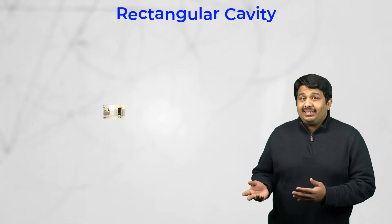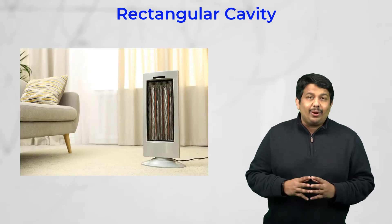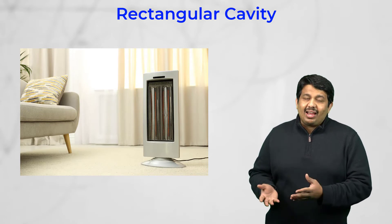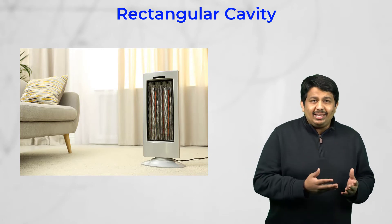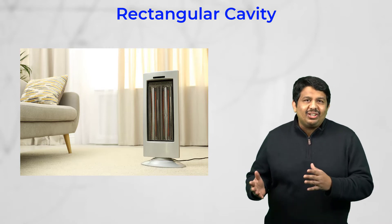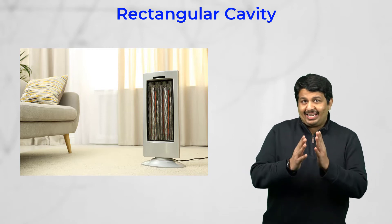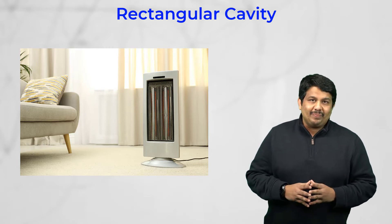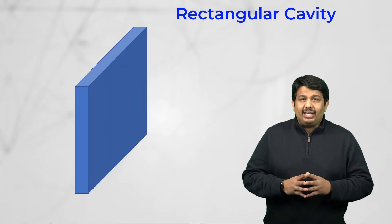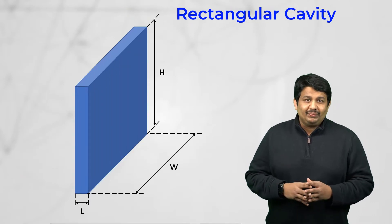A space heater inside a rectangular room relies on natural convective currents to heat the room and is a good example of natural convection inside a rectangular enclosure. Consider a rectangular cavity with dimensions L, W, and H.